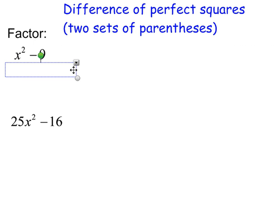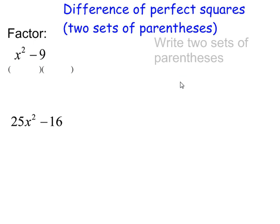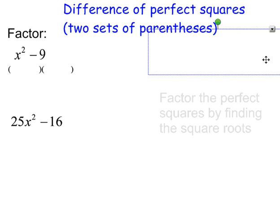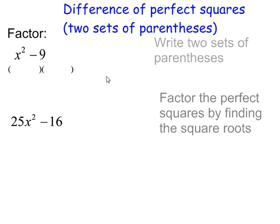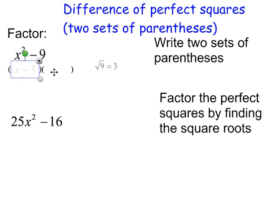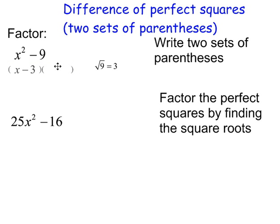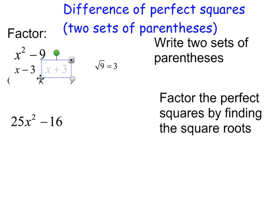Let's begin by writing our two sets of parentheses. You want to factor the perfect squares by finding the square roots. Take the square root of 9, that's 3. So inside the parentheses, we'll have x minus 3 and x plus 3. That's my final answer.